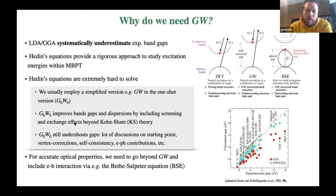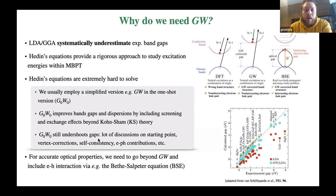We usually use the so-called one-shot or G0W0 method, in which we perform just one iteration of the GW diagram. G0W0 is much better than LDA or GGA, but the ab initio results are still underestimated compared to experiments. There's a lot of discussion in the literature related to the starting point, vertex corrections, and the inclusion of self-consistency. There are also other effects due to electron-phonon interaction. These diagrams compare the Kohn-Sham DFT band structure with GW, which usually leads to an opening of the ab initio band gap.